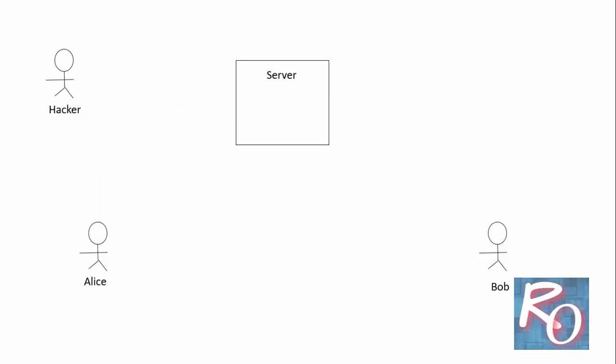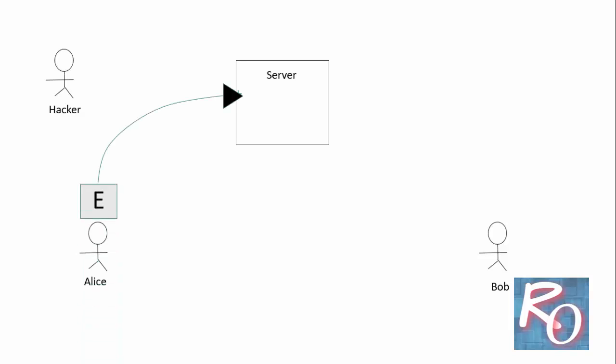To avoid this, a more secure form of communication was introduced where Alice first encrypts the message and then sends it to the server. If the hacker tries to hack the communication line between Alice and the server, they won't get to know the message. The message, once it arrives at the server, is decrypted and saved, then re-encrypted and sent to Bob.